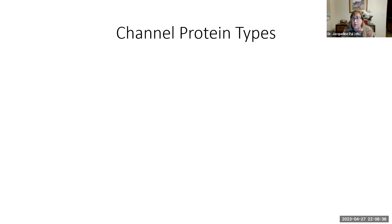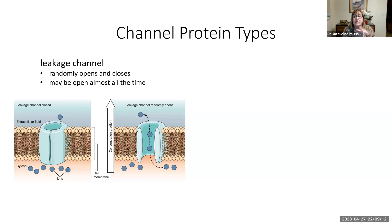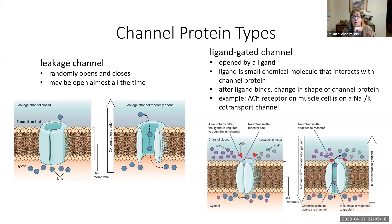Looking at channel proteins specifically, there are four different kinds, and two of the names you'll hear repeatedly throughout physiology. The first is called a leakage channel, also known as leaky channels. They open up randomly, close, and randomly open again — some can be open almost all the time, only closing for seconds. When open, ions go down their concentration gradients with no energy involved.